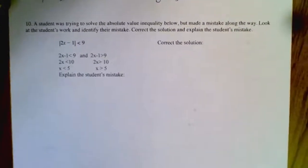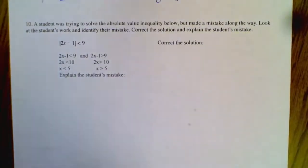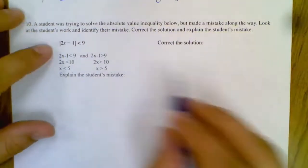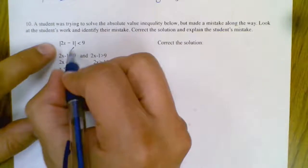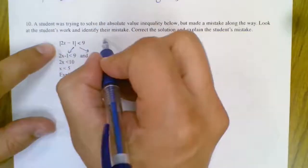Alright, now a student's trying to solve an absolute value inequality below but made a mistake along the way. Look at the student's work and identify their mistake. Alright, so let's check it out. They got this by itself, they split into two parts, and remember